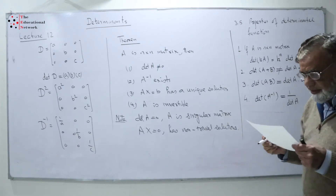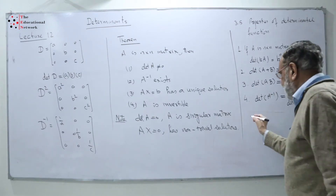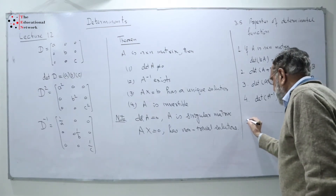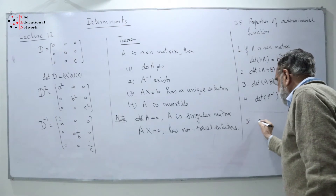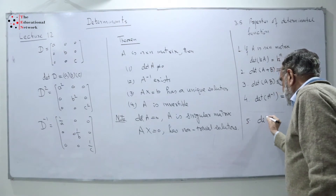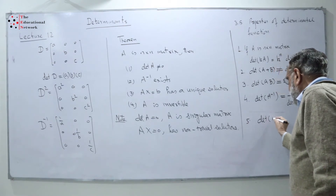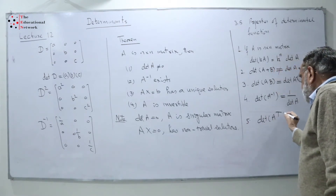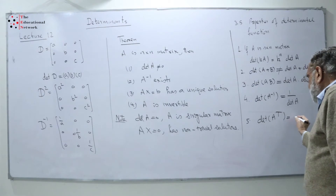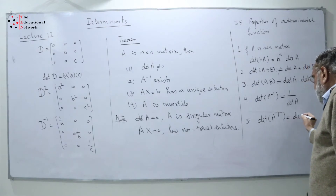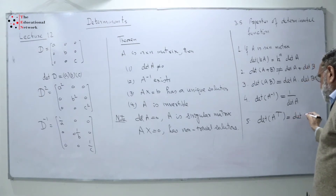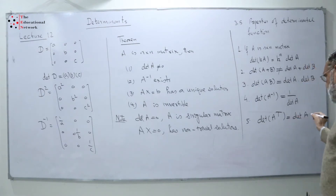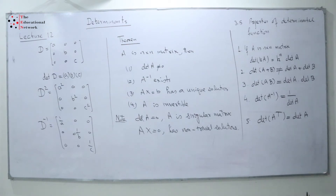Property 5: determinant of A transpose is equal to determinant of A. As I told you, we can expand by any row or by any column and we get the same result.